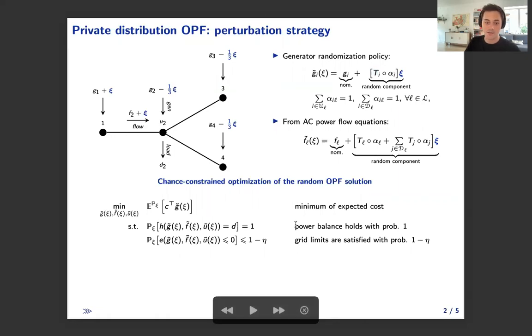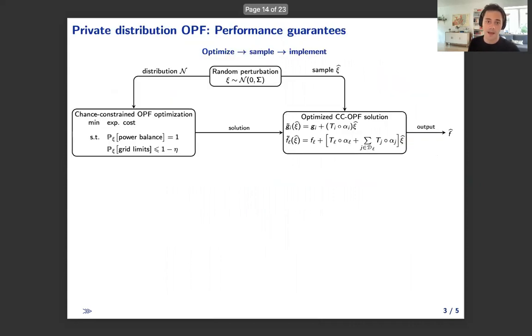And we indeed do so using the following chance constraint program that takes these generator policies and expression of state variables as functions and minimizes the expected dispatch cost, subject to probabilistic constraints that require OPF feasibility with very high probability, one minus eta, where eta is a very small parameter. So equations must satisfy this probability 99%.